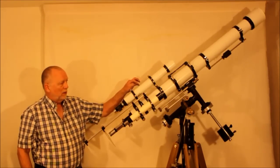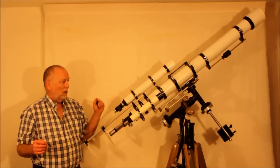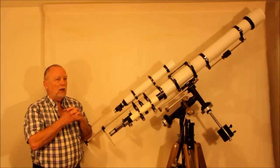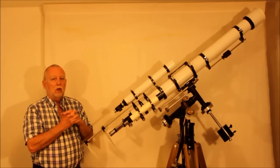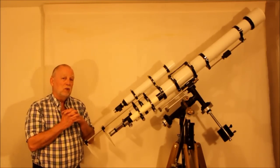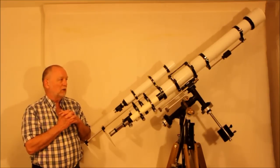The guide scope here, I made this guide scope essentially from scratch. I didn't make the objective but I made the guide scope. The guide scope is, as with a Unitron, it's a 60 millimeter F700. So it's a short focal length refractor.